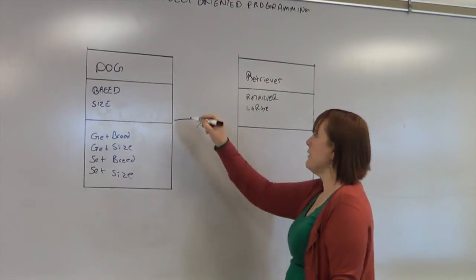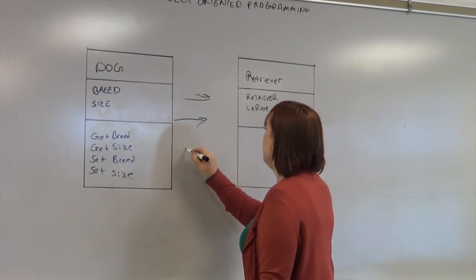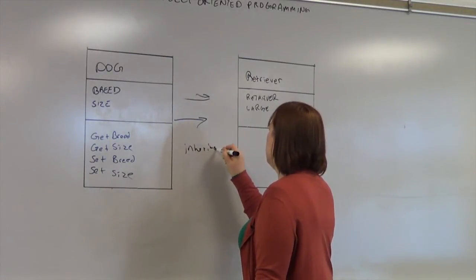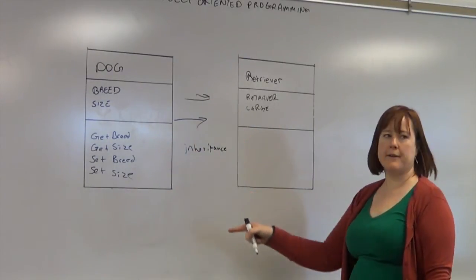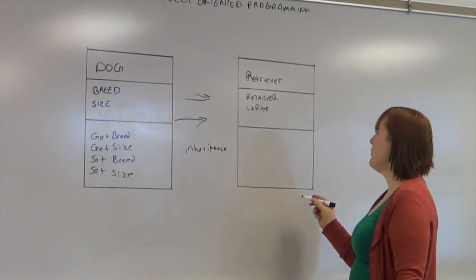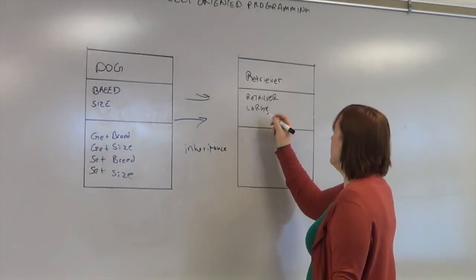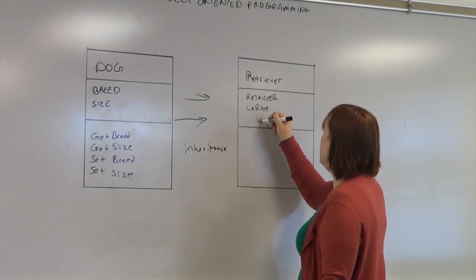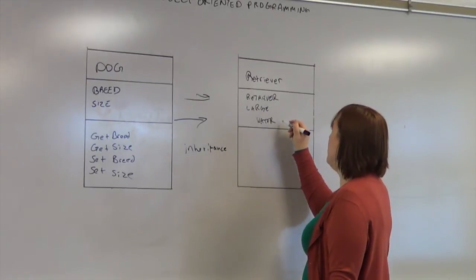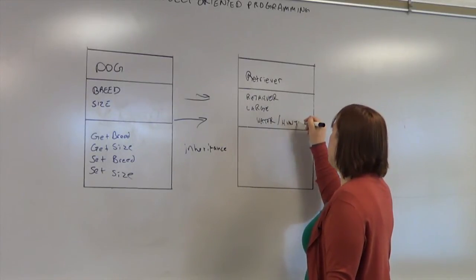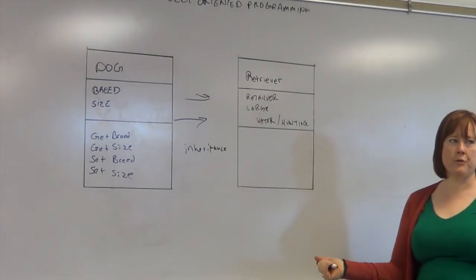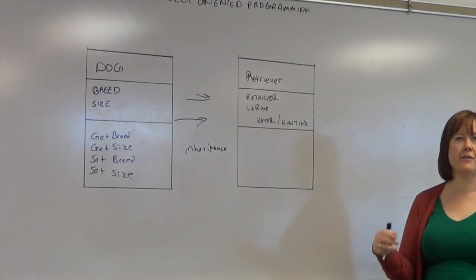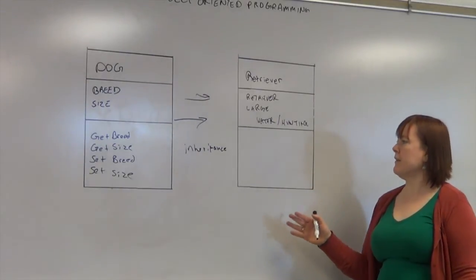So it will inherit all of the basic attributes of the parent class. But we could also have if it works in water. Or is it a hunting dog? Because we can further classify retrievers to be labrador retrievers, golden retrievers. And they each do something a little bit different.